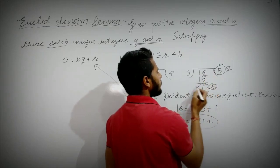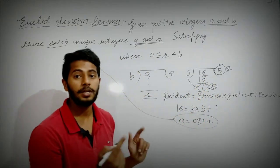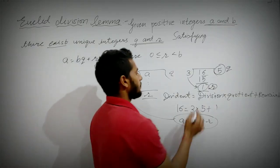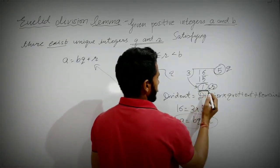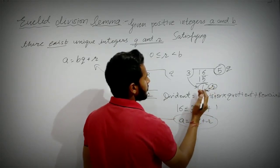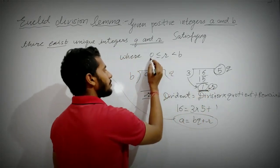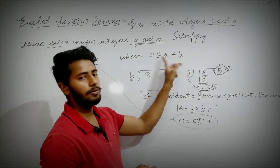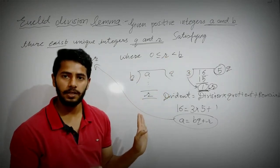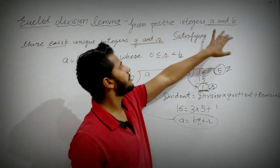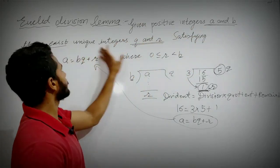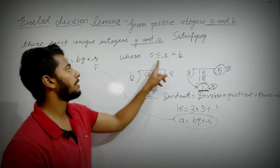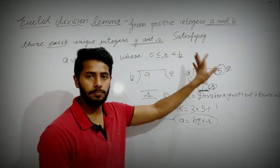If we divide any number by 3, can the remainder be 3 or more than 3? No, it cannot. It will always be less than 3. So there are restrictions on the remainder — it can be 0, 1, or 2 — it will be less than 3. So 0 ≤ R < B, since we are dividing by B.